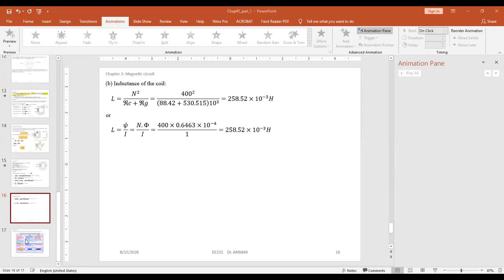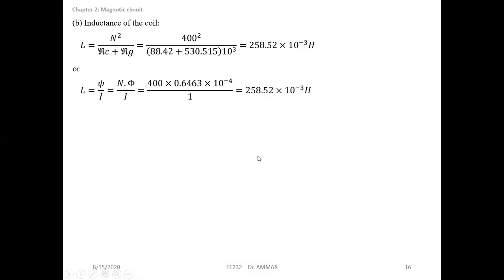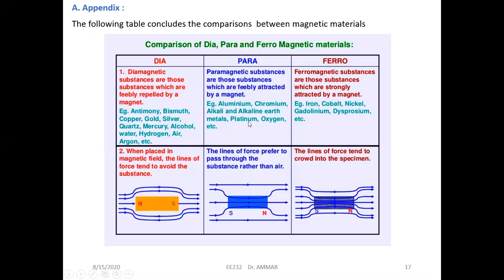Let's see this last slide. The last slide is an appendix. I just want to mention some magnetic materials. As I said, we have three types of materials: diamagnetic, paramagnetic, and ferromagnetic materials.